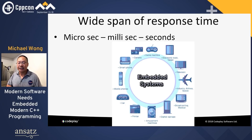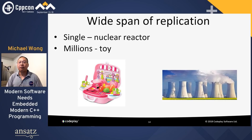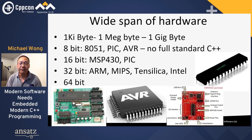Predictability might be key. Correctness is even more important than usual. They also span a wide range of replications, from single ones like a nuclear reactor to millions of toys in production. They span a wide range of hardware: from 1 kilobyte to gigabytes, 8-bit systems like 8051, PIC, AVR where there's no full C++ standard support, 16-bit systems like MSP430, or 32-bit from ARM, MIPS, Tensilica, Intel, or even 64-bits.